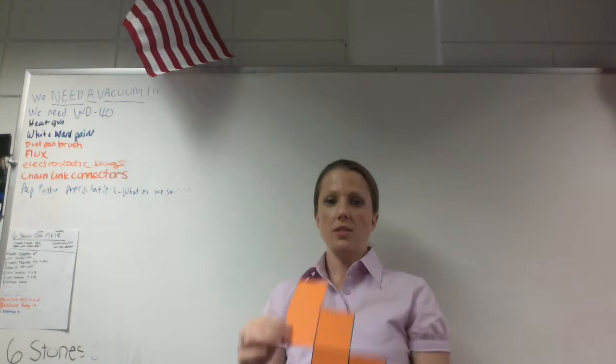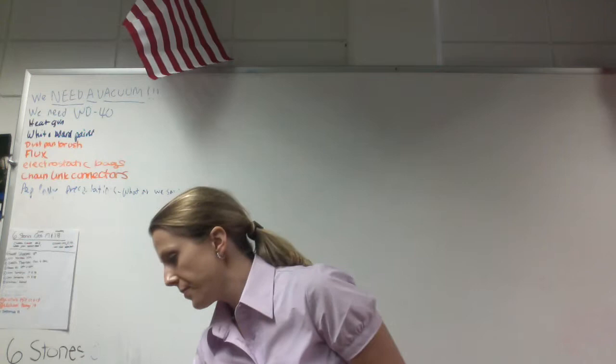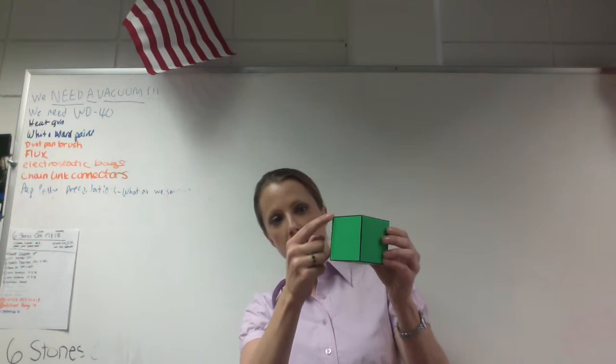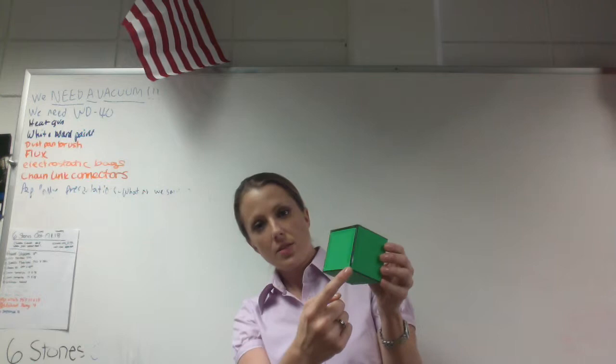The term three dimensions, or 3D, means that the object has a height, a width, and a length right here. This would be the height from here to here, the width from this point to this point, and the length from this point to this point.